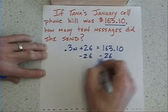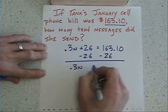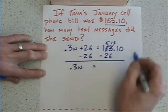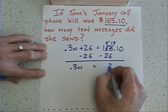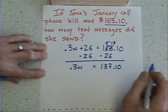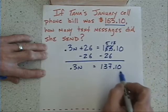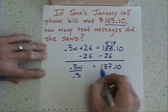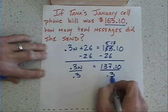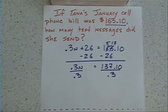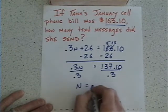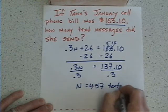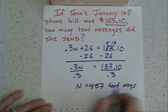Subtract 26 from both sides, giving us .3n = 137.10. Then divide both sides by .3, and her total number of texts ended up being 457 text messages that month — that's an awful lot.